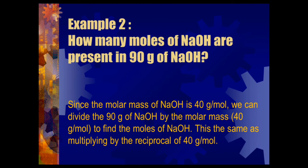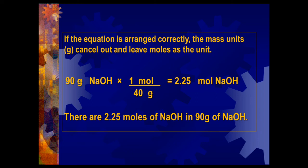Example 2: How many moles of sodium hydroxide are present in 90 grams of sodium hydroxide? Since the molar mass of sodium hydroxide is 40 g/mol, we divide 90 grams by 40 g/mol — the gram units cancel, leaving moles. 90 divided by 40 gives 2.25 moles. Therefore, there are 2.25 moles of sodium hydroxide in 90 grams of sodium hydroxide.